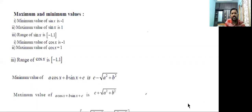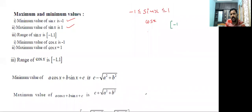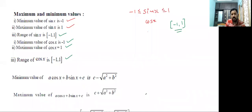We already know the range of sine x: minus 1 less than or equal to sine x less than or equal to 1. Same for cos x. The minimum value of sine x is minus 1 and the maximum value is 1. Since equality symbols are present, we write the range in closed brackets: [-1, 1]. Same for cos x — minimum value minus 1, maximum value 1, range [-1, 1].